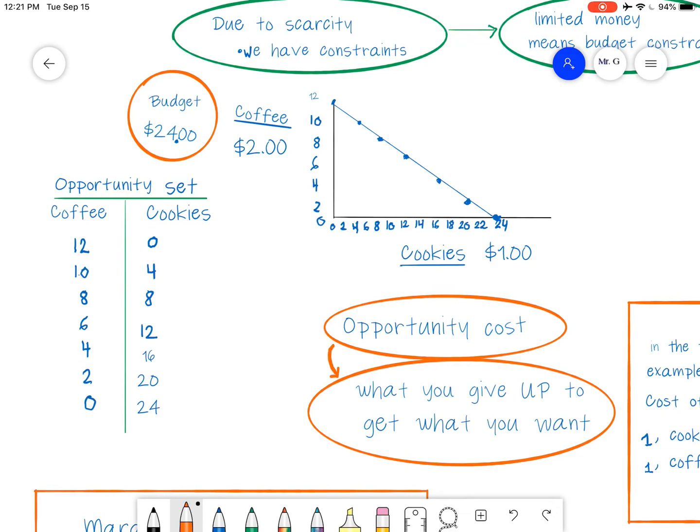But I can't buy 25 cookies and zero coffees. Why? Because that would be $25 and I only have 24. So we cannot move beyond the line, but we can also take any point below the line. We just don't spend our money. So on the budget constraint line, we're spending all of our budget. And that is the maximum. We can't go beyond that.